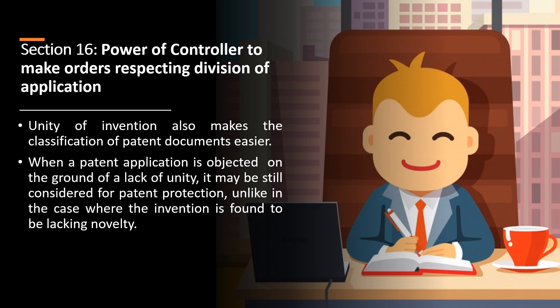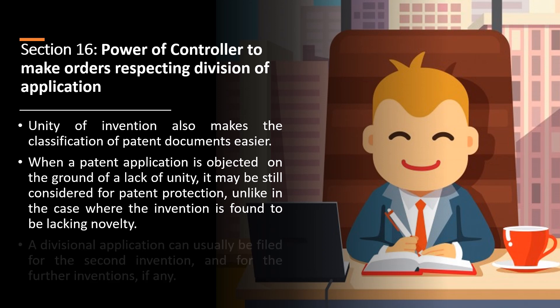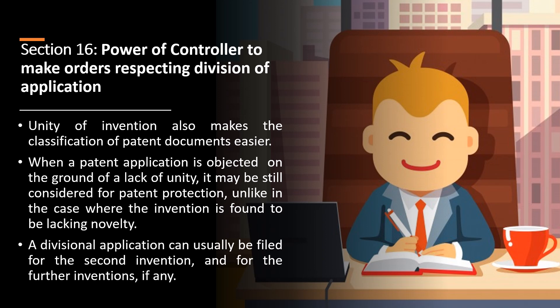When a patent application is objected to on the ground of lack of unity, it may still be considered for patent protection — unlike the case where the invention is found to be lacking novelty. A divisional application can usually be filed for the second invention, and for further inventions if any.